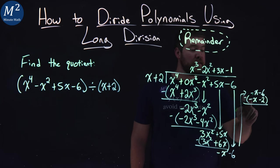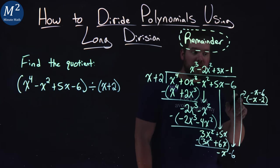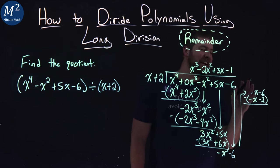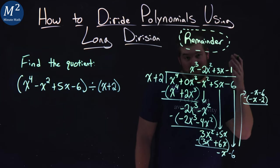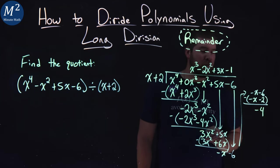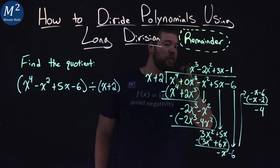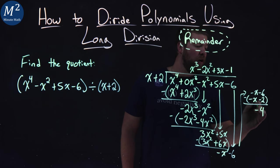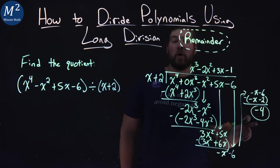We want to subtract. Negative x minus negative x cancels out to be 0. Negative 6 minus negative 2 is negative 4. And since we've finished lining up all the way to x to the 0 power, our negative 4 is going to be our remainder.